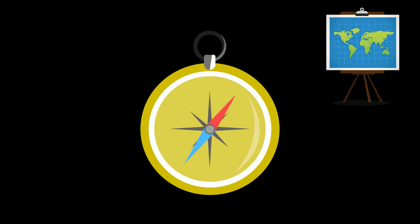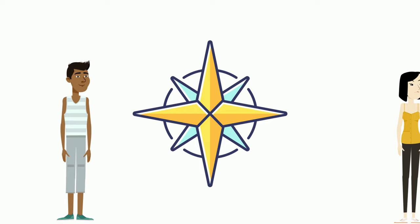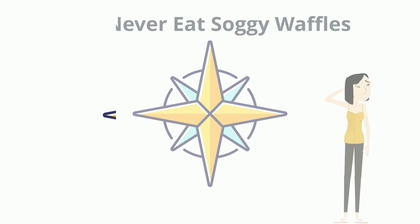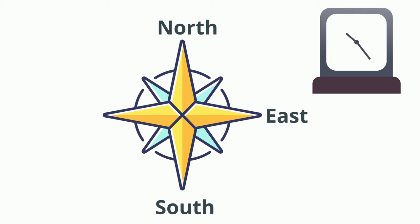The cardinal directions are found on maps and compasses and also can be found on a compass rose. Here's what one example of a compass rose looks like. An easy way to remember the directions is to use 'Never Eat Soggy Waffles.' If you go in a clockwise manner, you get north, east, south, west.